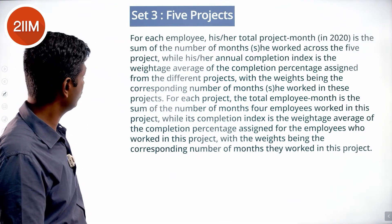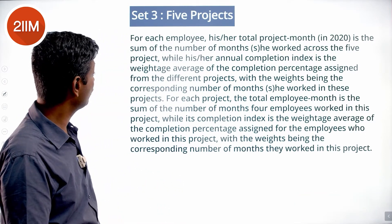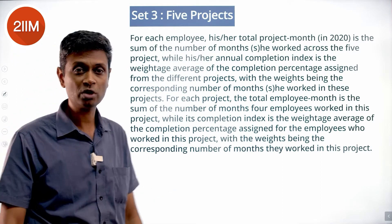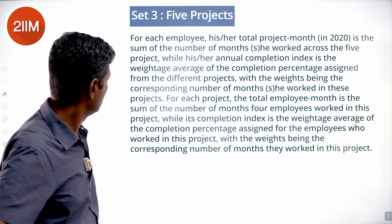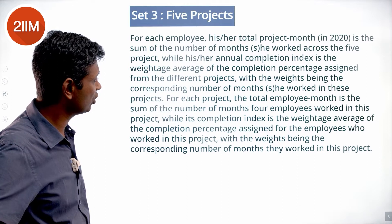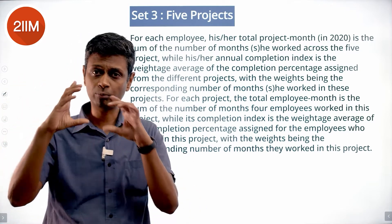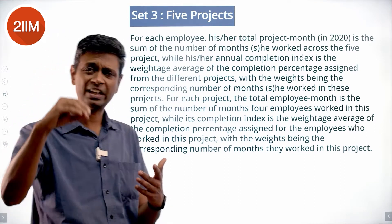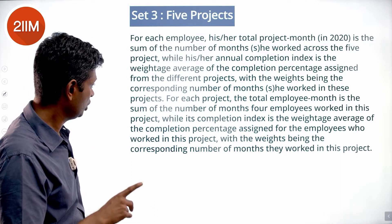For each employee, his or her total project month is the sum of the number of months he or she worked across the five projects. The annual completion index is the weighted average of the completion percentage attained from different projects, with the weights being the corresponding number of months worked in those projects. For each project, the total employee month is the sum of the number of months the four employees worked in that project, and its completion index is the weighted average of the completion percentages assigned for the employees who worked in that project.